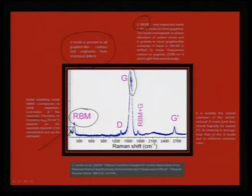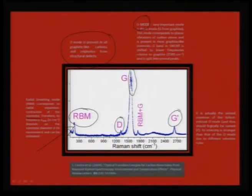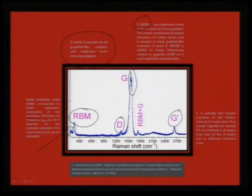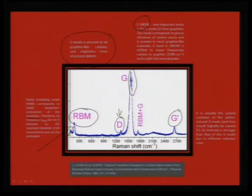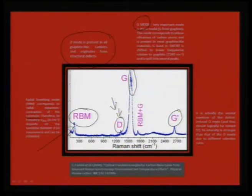Another important mode is the D mode, present in all graphite-like carbons and originating from structural defects. This gives a clue whether you have functionalized your carbon nanotube. The G prime mode is the second overtone of D, and its intensity tells whether you have functionalized the single-wall nanotube. For example, if you treat it with nitric acid and boil it, this peak is a measure of functionalization. If G prime is absent, you say it is a pristine single-wall nanotube. So this serves as a very good optimization tool for single-wall nanotubes.